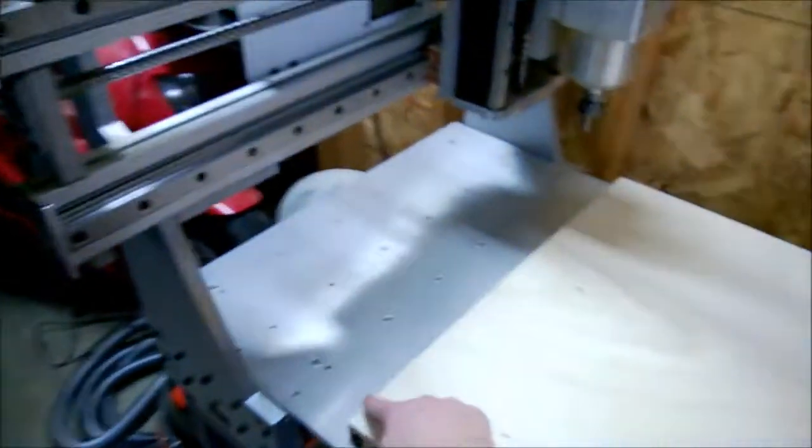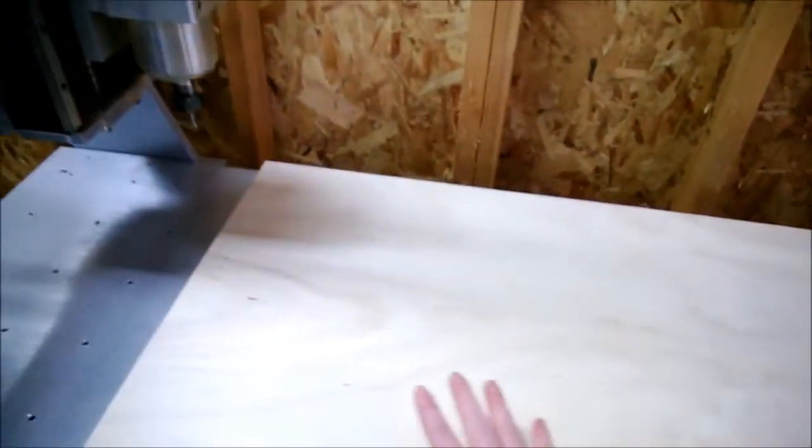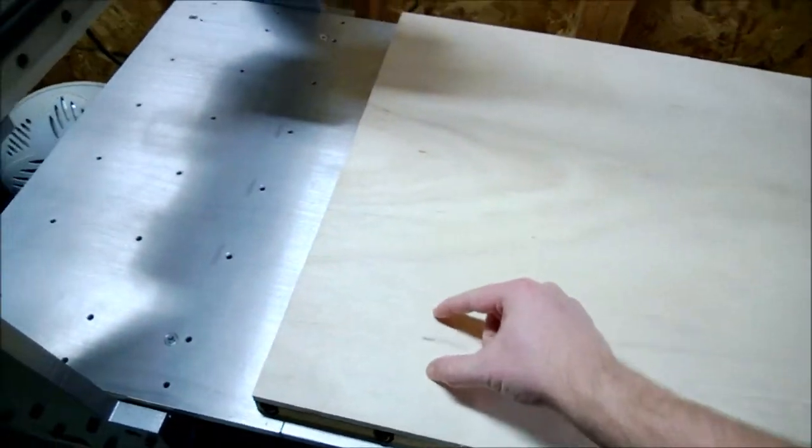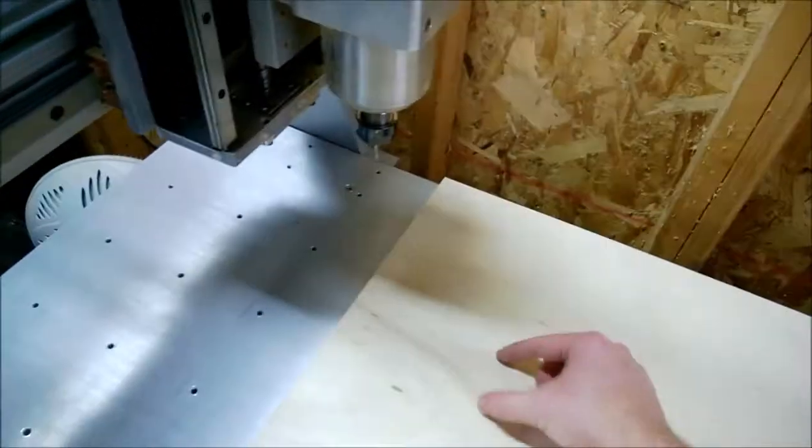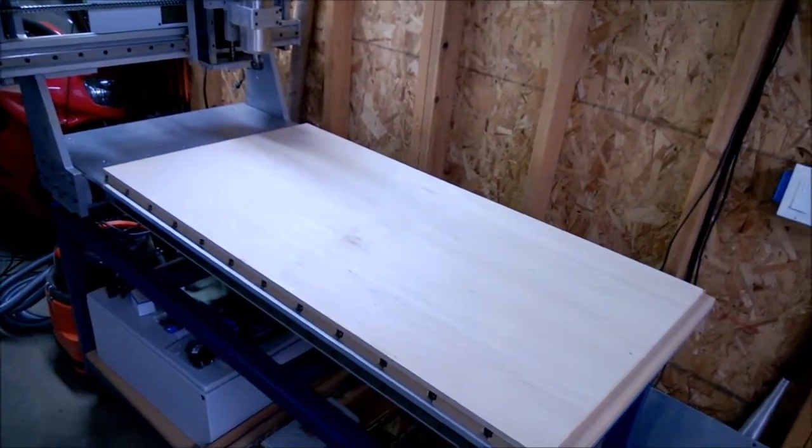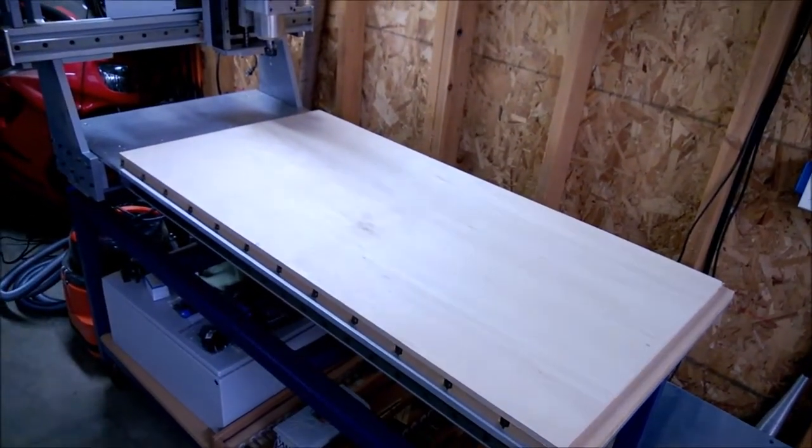With that I think I'm queued up. I already zeroed the table out on this corner over here and I am not doing tabs on the parts. I am just going to rely on the tape. I have four strips approximately like so all the way across. And hopefully that will be sufficient to provide enough adhesion so that none of the parts fly up and get ruined.